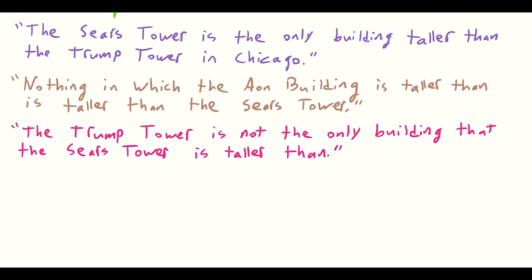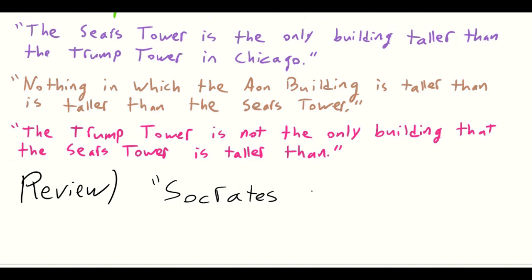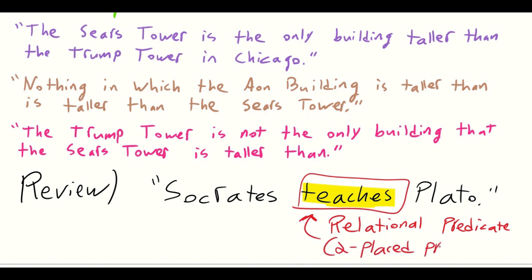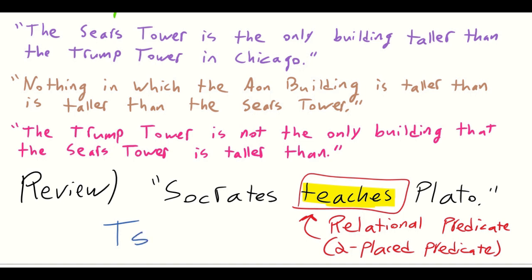Let's review what a relational predicate is. For example, let's say we have 'Socrates teaches Plato.' So 'teaches' is a relational predicate, and it is a two-placed predicate. When we translate that into predicate logic, we get capital T for 'teaches' — that's our relational predicate — lowercase s for Socrates, and lowercase p for Plato. Hence, we have Socrates teaches Plato.